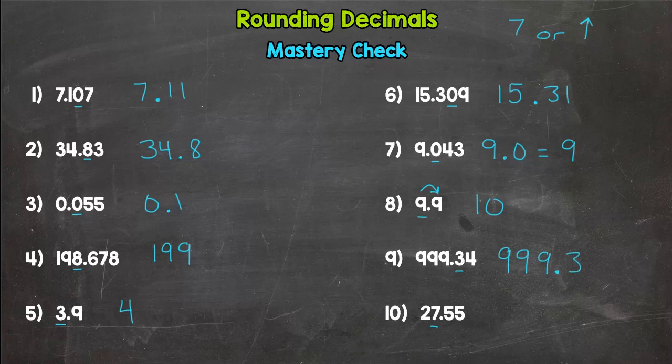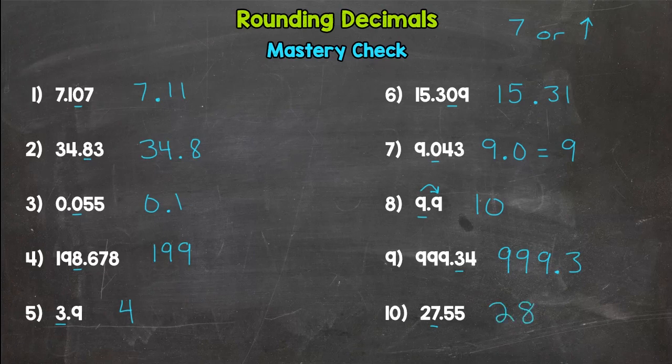And then lastly, number ten, rounding to the nearest whole number. So are we closer to twenty-eight or twenty-seven, and that five in the tenths place says we should round up to twenty-eight.